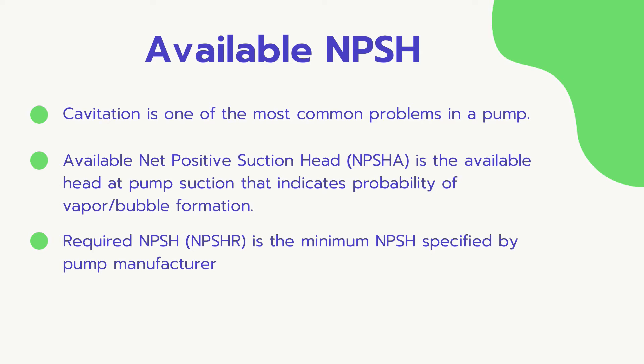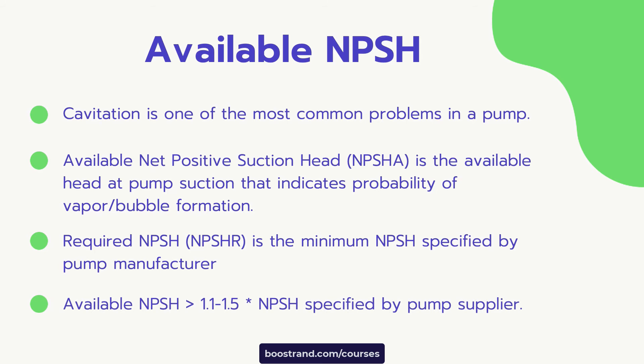So how much would this margin be? To avoid any process deviation from the NPSHA, we usually take the margin to be around 10% to 50%. This means that the available net positive suction head should be greater than 1.1 to 1.5 times the required net positive suction head specified by the supplier.